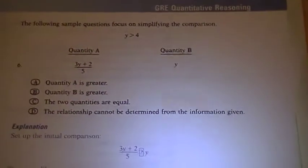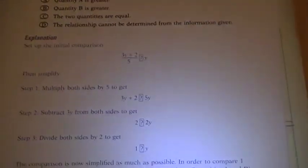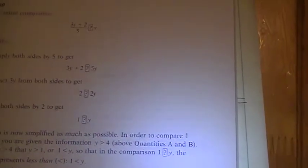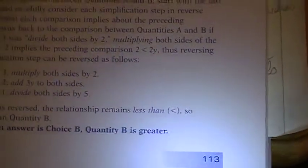Number six is very interesting because they actually do a lot of algebraic manipulation here. When they look at the two different columns, they have it come down to one versus y. Since they say y is greater than four at the top, they can actually say that y has to be greater.